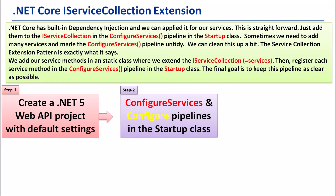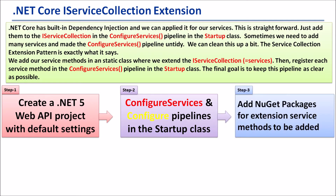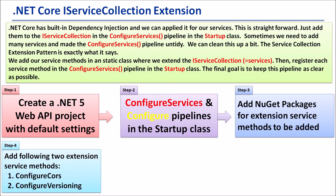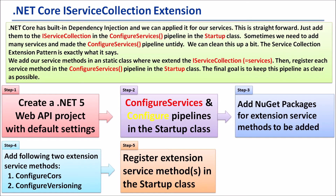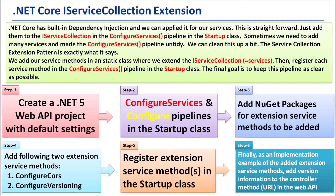Step 2: Configure services and the Configure pipeline in the startup class. Step 3: Add NuGet packages for extension service methods to be added. Step 4: Add the following two extension service methods. Step 5: Register extension service methods in the startup class. Step 6: As an implementation example of the added extension service methods, add version information to the controller method, namely the URL in the web API.